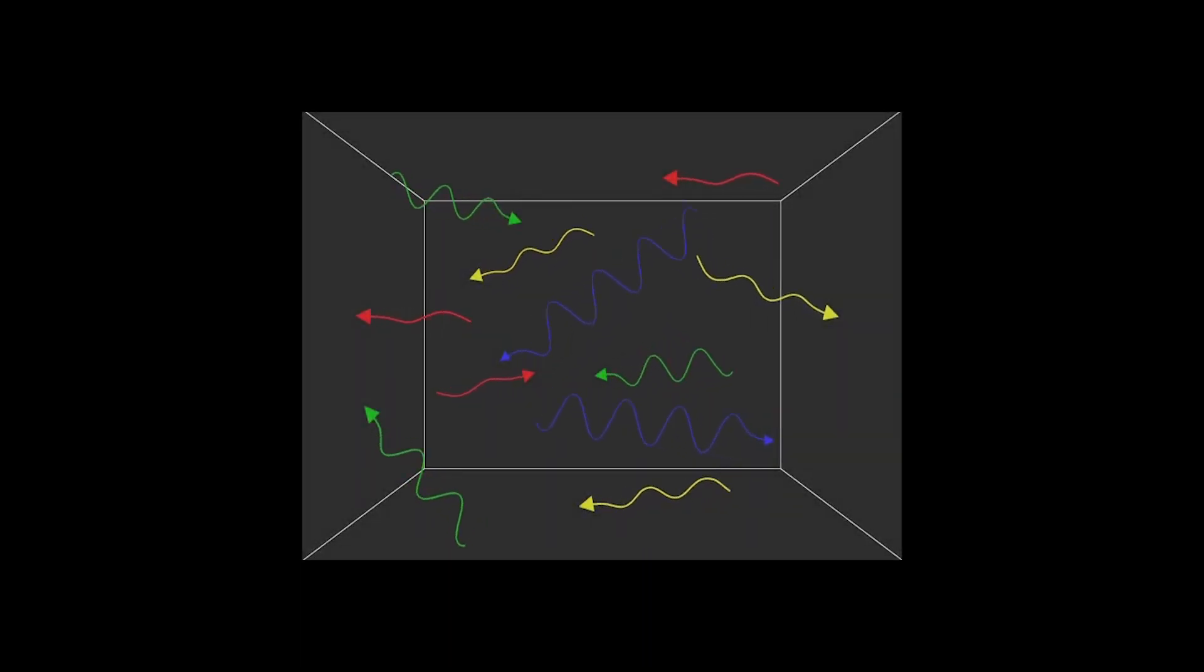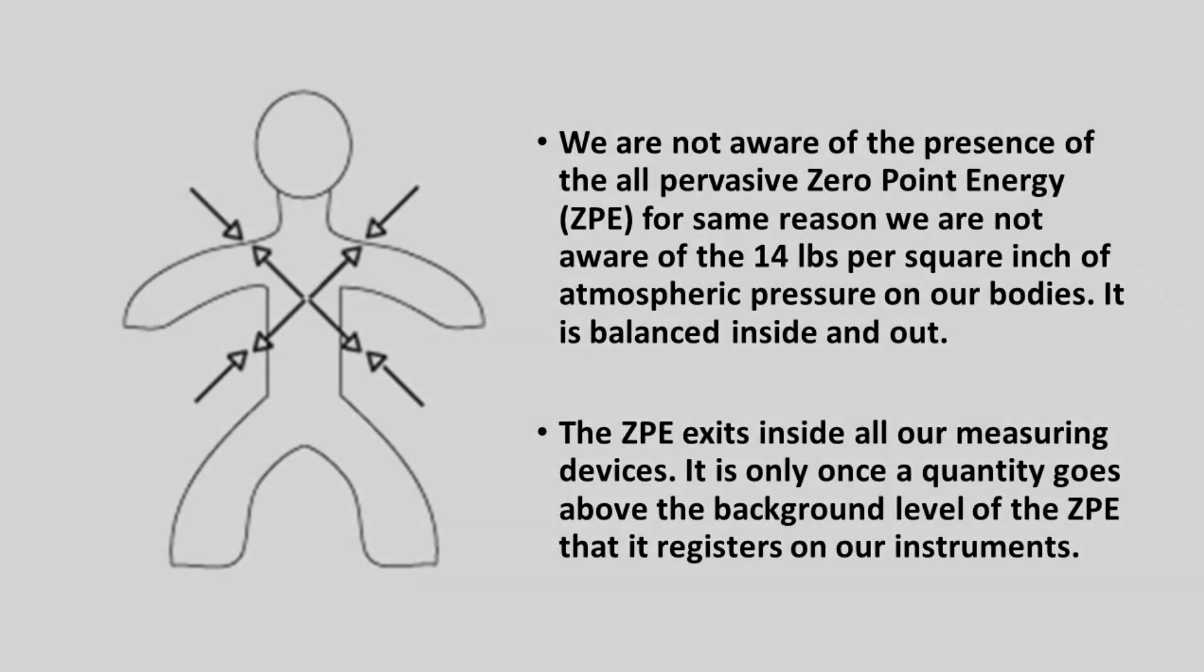However, in the early 20th century, theory and experiment both revealed that there was an energy there, intrinsic to the vacuum. Because that energy exists even at absolute zero temperature in an actual vacuum, it has been called the zero-point energy. The real vacuum in which this exists is called the physical vacuum. We are not aware of the presence of the all-pervasive zero-point energy, ZPE. For the same reason we are not aware of the 14 pounds per square inch of atmospheric pressure on our bodies. It is balanced inside and out. The ZPE exists inside all our measuring devices. It is only once a quantity goes above the ZPE background level that it registers on our instruments.